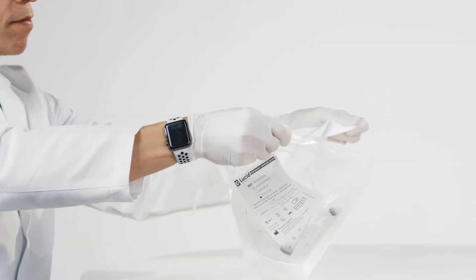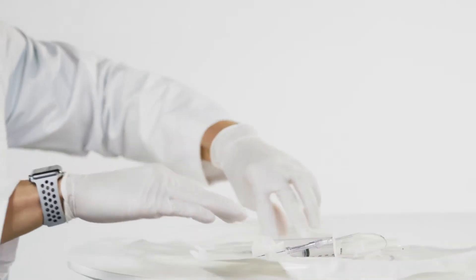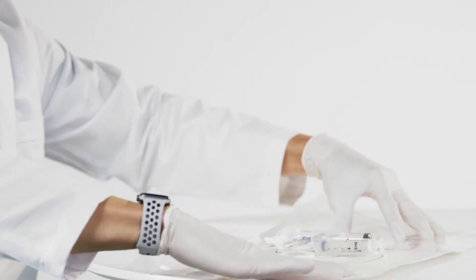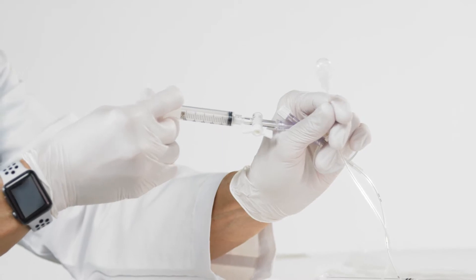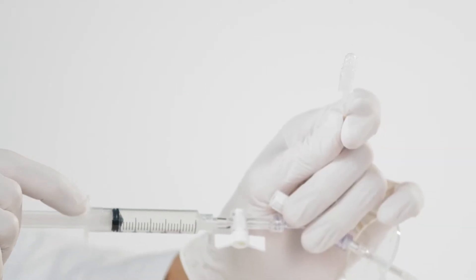The ESOCheck device consists of a capsule attached to a thin catheter with measurement markings, as well as two syringes to inflate and deflate the capsule during cell collection.